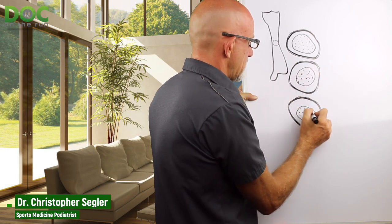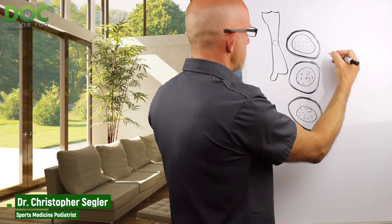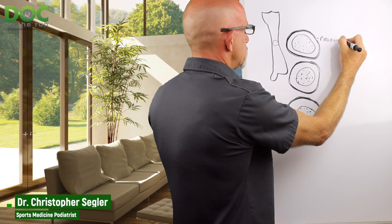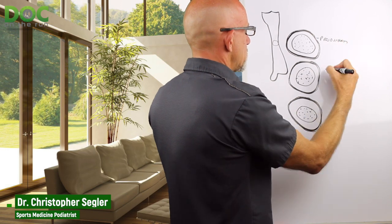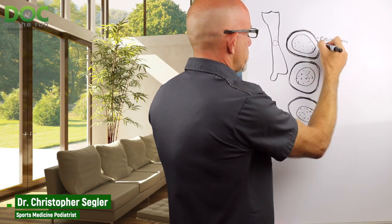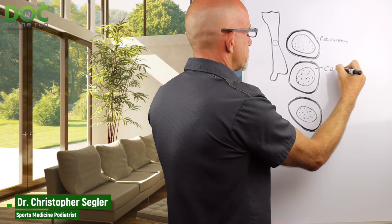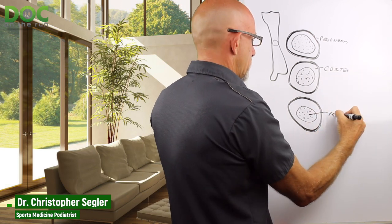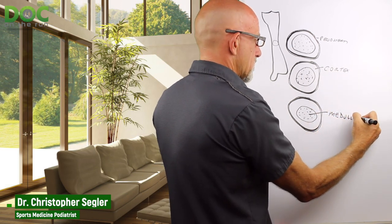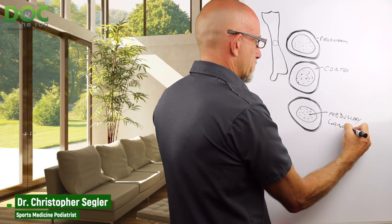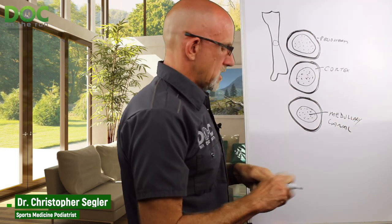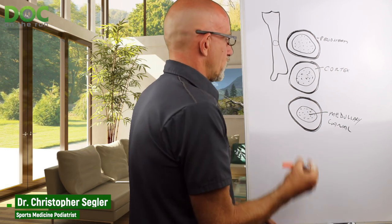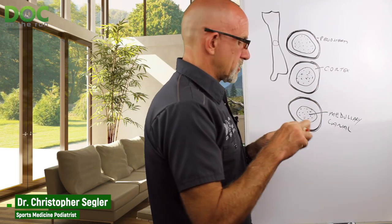It may not surprise you to hear that there are three specific parts — the periosteum, the cortex, and the medullary canal. When you get a stress fracture, there are different forms that could show up on the MRI corresponding to each of these three parts.